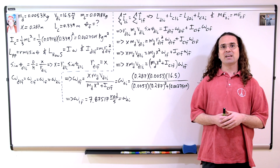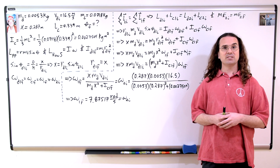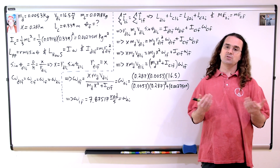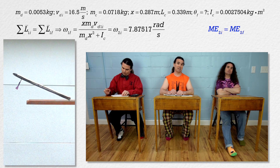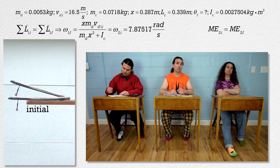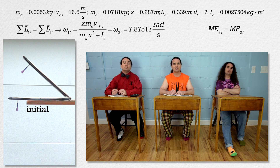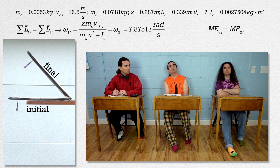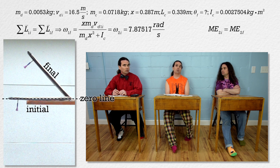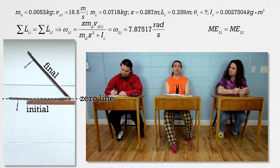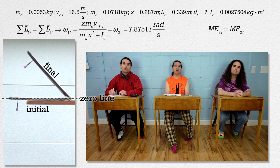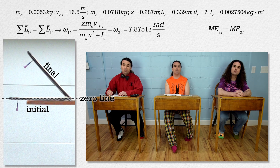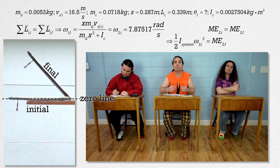So now we have the final angular velocity of the system for part one, which is also the initial angular velocity of the system for part two. Bobby, please work on part two. Part two is conservation of mechanical energy. The initial point is right after the collision but before the cardboard starts to rise. Let's set the final point at the maximum angle the system rotates to, and put the horizontal zero line at the initial point for part two. There are no springs, so no elastic potential energy. Initially the dart and cardboard are at the zero line, so neither has gravitational potential energy initially. The only initial mechanical energy is the combined rotational kinetic energy of both the dart and the cardboard.